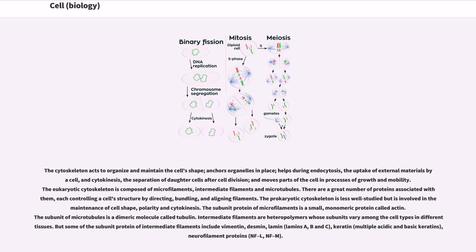The eukaryotic cytoskeleton is composed of microfilaments, intermediate filaments and microtubules. There are a great number of proteins associated with them, each controlling a cell's structure by directing, bundling, and aligning filaments. The prokaryotic cytoskeleton is less well studied but is involved in the maintenance of cell shape, polarity and cytokinesis.